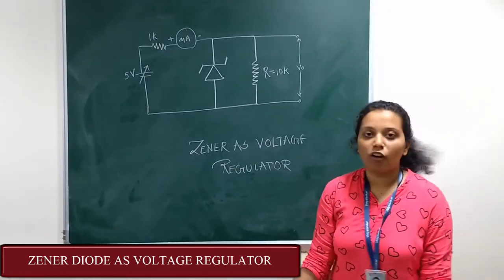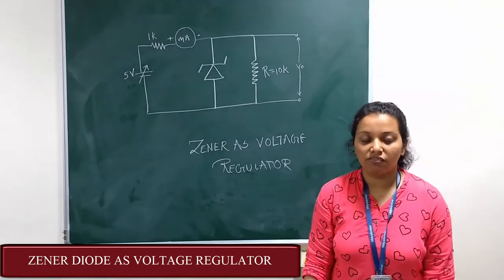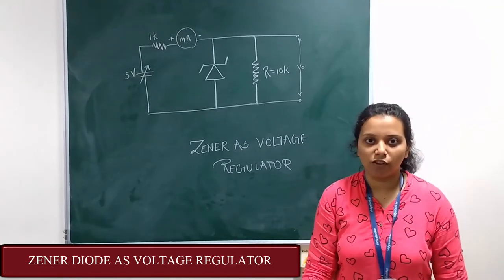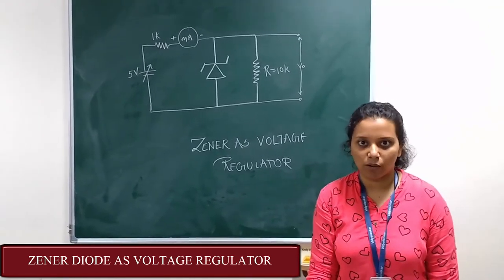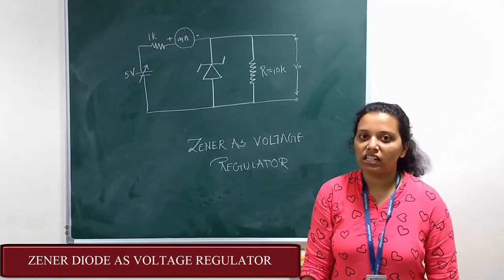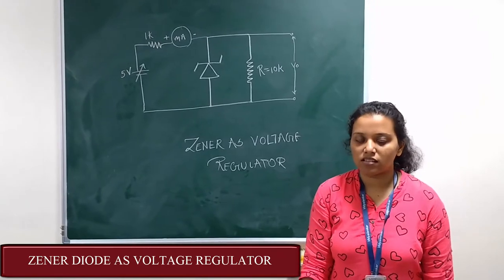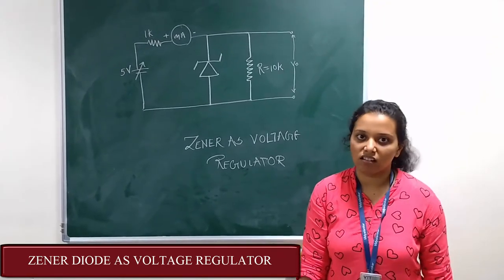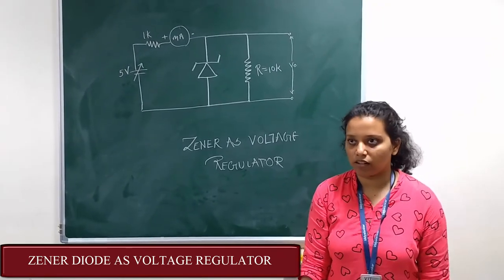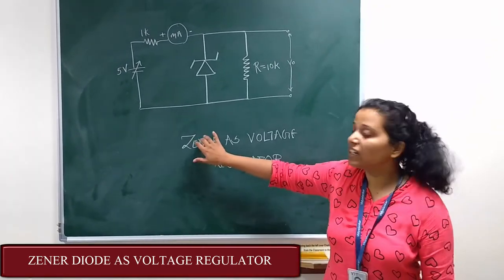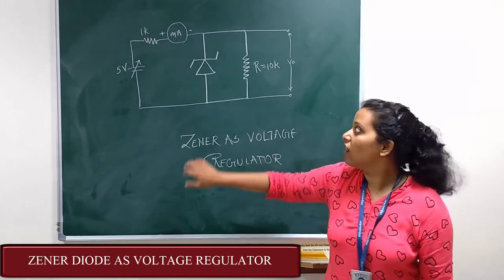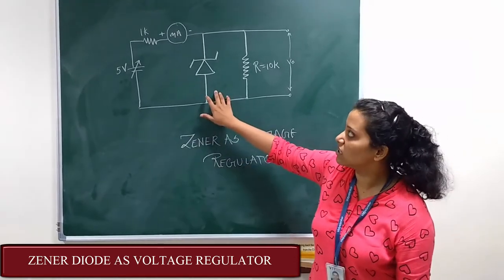When the zener diode is forward biased it acts like a normal diode, but when it is reverse biased it acts as a voltage regulator. For checking whether it acts as a voltage regulator or not, we are using this circuit.